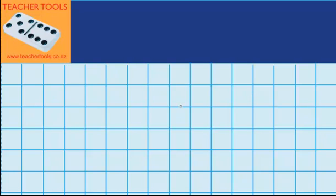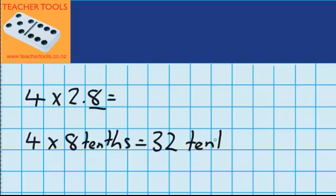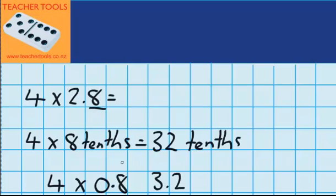Now let's finish with one quickly that has no materials. I'm going to imagine I've got four groups, and in each group there are 2.8 chocolate bars. Let's work out the tenths first. There are four groups, and there are 8 tenths in each. Four groups of 8 tenths equals 32 tenths. Since there are 10 tenths in a whole, 20 tenths would be two wholes, 30 tenths must be three wholes, and 2 tenths left over. I could write that as four times 0.8, because this 8 is in the tenths column.